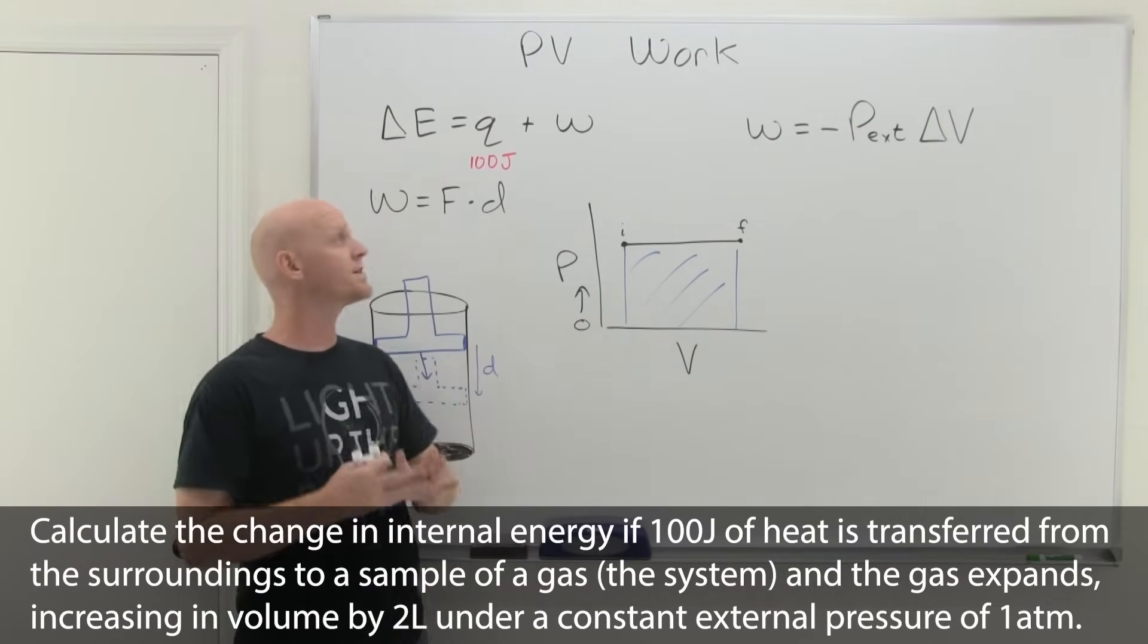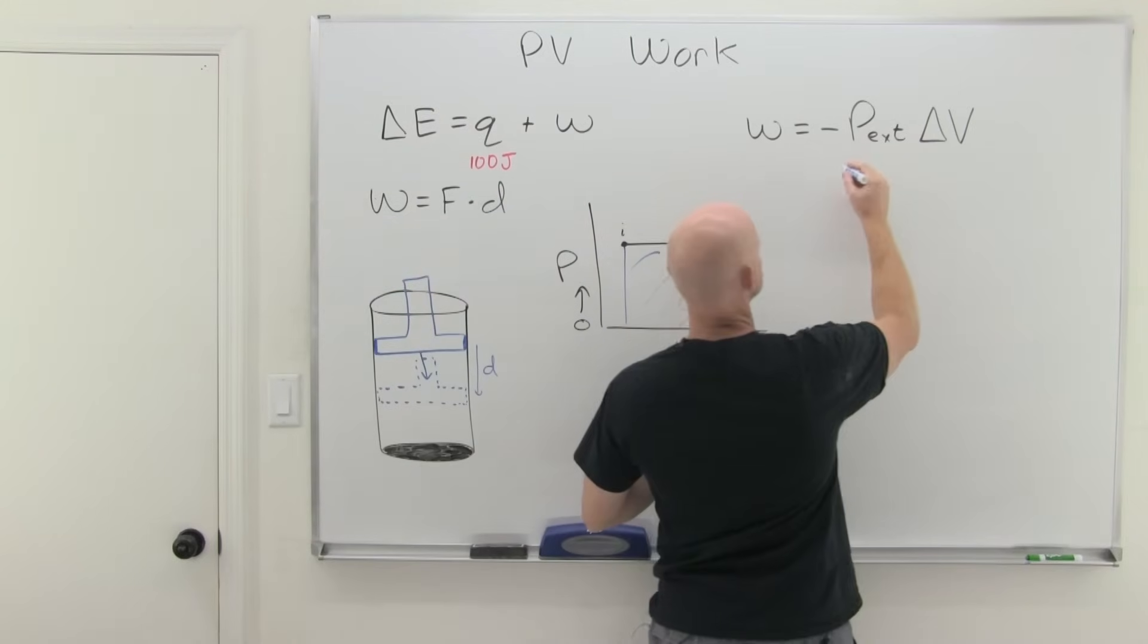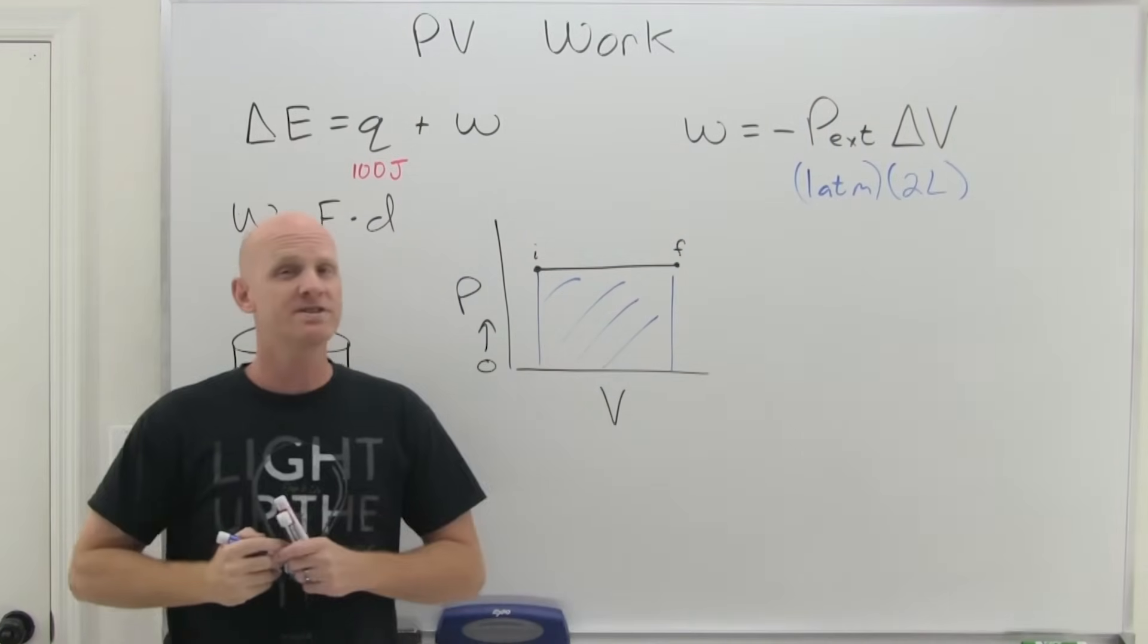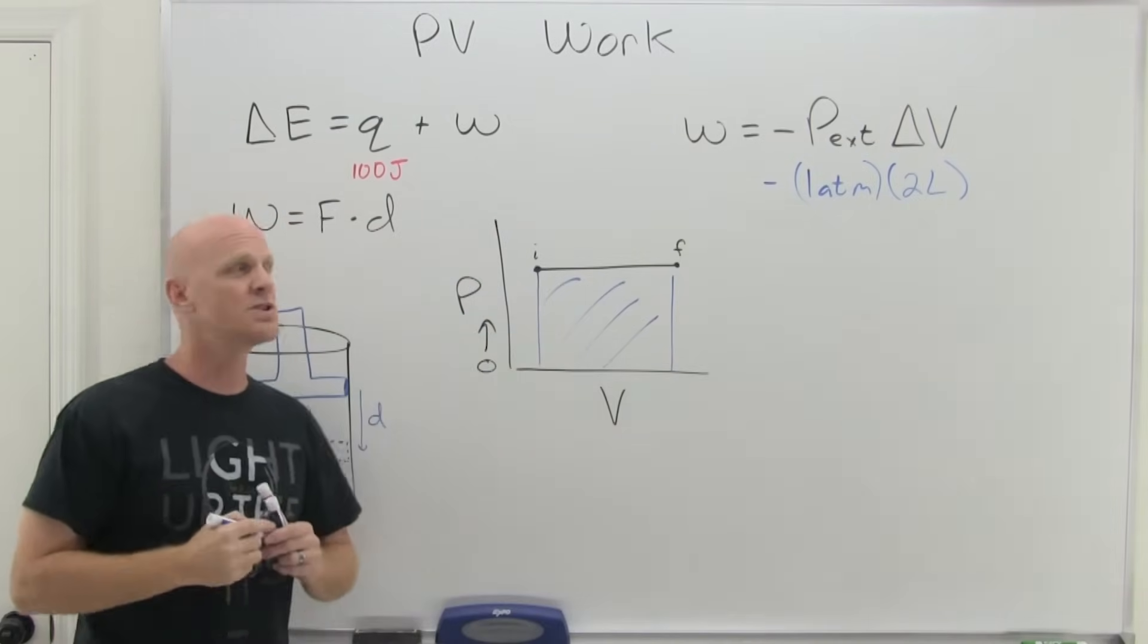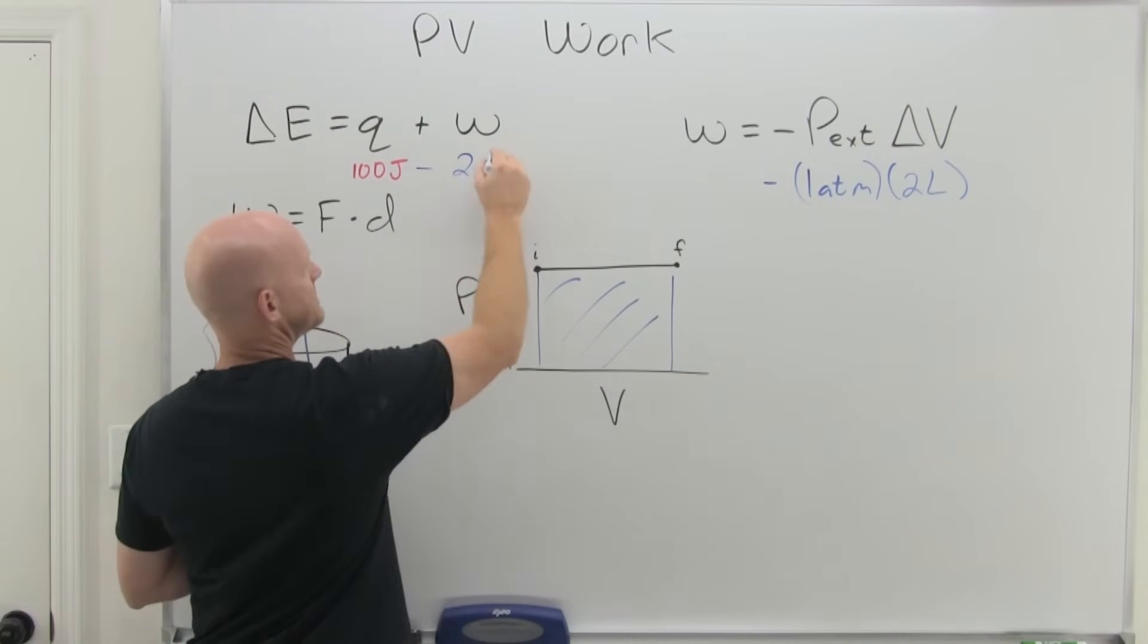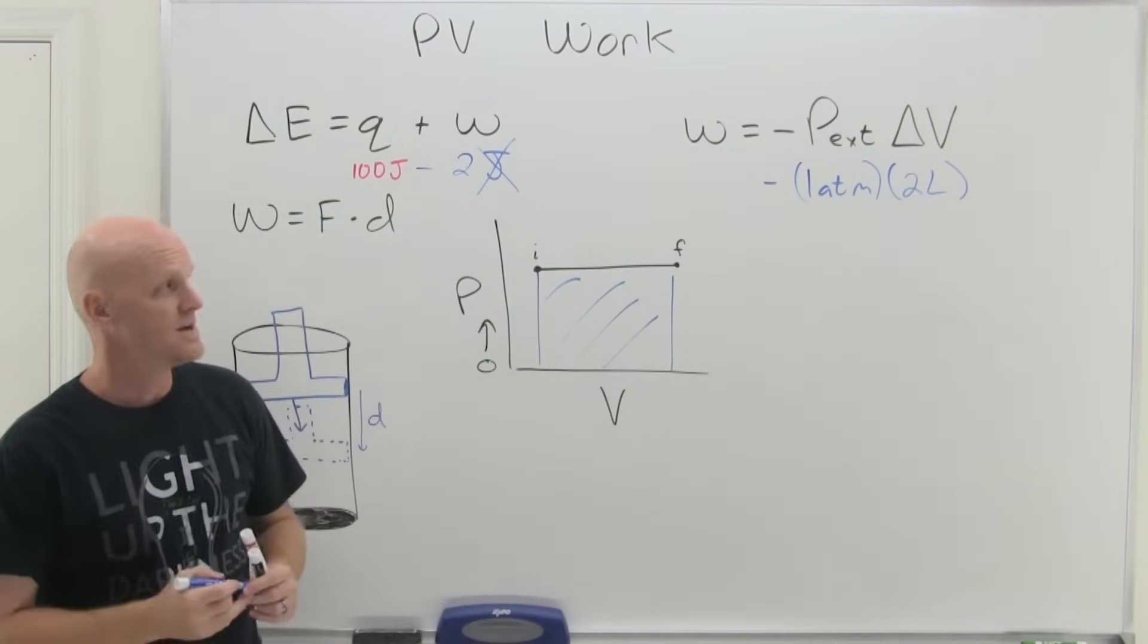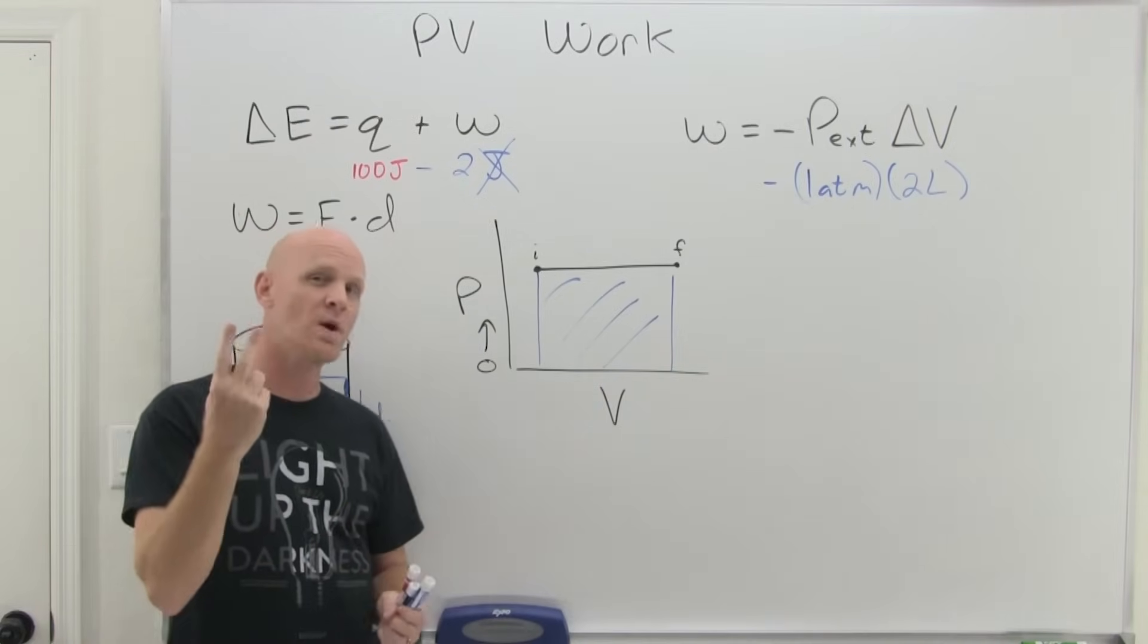Well, in this case, because it's an expansion, you know that work is going to be negative. The question is, what's the value? And you might be tempted to be like, well, Chad told me it's one atmosphere and then times it got increased by two liters. And then we'll put the negative sign out front. So one times two is two. And then you're like minus two, except it's not a joule right now. It's a liter atmosphere. And that is by no means the same thing as a joule. So you've got to convert these liter atmospheres into joules.